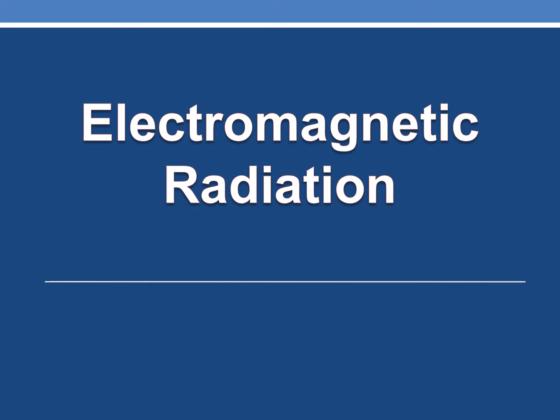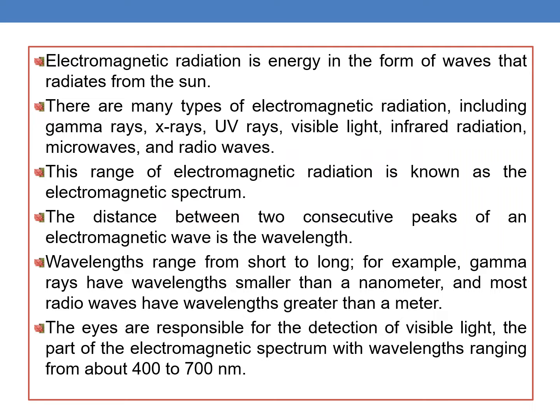Before that, we will discuss what are electromagnetic radiations. Electromagnetic radiation is an energy in the form of waves that radiates from the sun. There are many types of electromagnetic radiation including gamma rays, X-rays, UV rays, visible light, IR radiation, microwaves and radio waves.